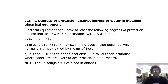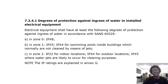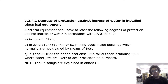For selection and erection of electrical equipment — degrees of protection against ingress of water: installed electrical equipment shall have at least the following degrees of protection in accordance with SANS 60529. In zone 0: IPX8. In zone 1: IPX5, or IPX4 for swimming pools inside buildings not cleaned by means of jets. In zone 2: IP22 for indoor locations; IPX4 for outdoor locations; IPX5 where water jets are likely to occur for cleaning purposes.